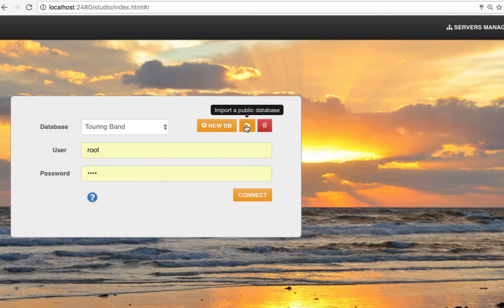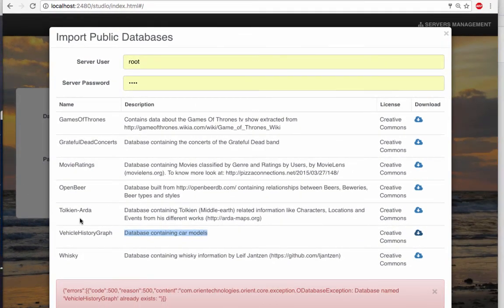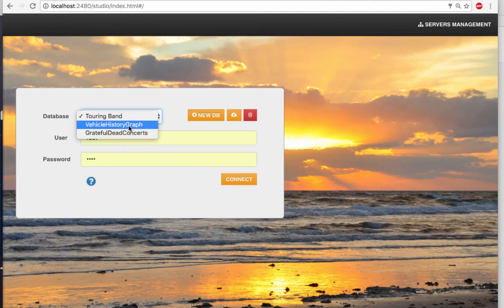From here, I can import a public database, go to Vehicle History Graph down near the bottom, and download it. I get an error because I already have this database downloaded. But nonetheless, I can access it.